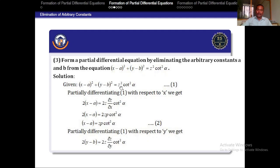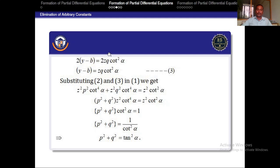The Y-term has no X, so it is 0. On the right side, differentiating Z²cot²α gives 2Z·(∂Z/∂X)·cot²α. Cancelling the factor of 2 on both sides gives X − A = ZP·cot²α. Similarly differentiating with respect to Y gives Y − B = ZQ·cot²α.